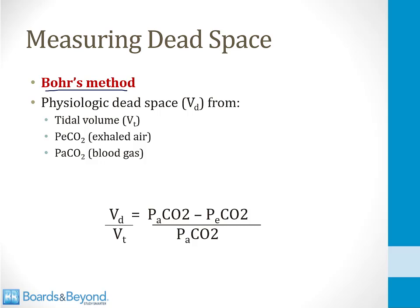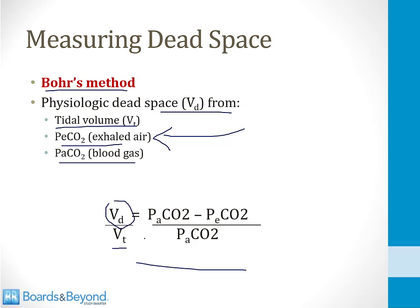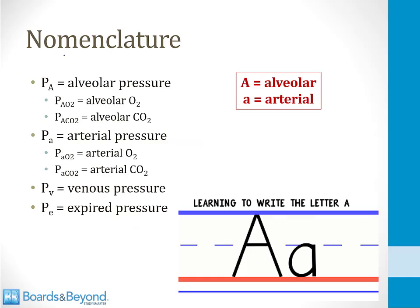Bohr's method lets us determine the physiologic dead space volume, Vd, if we know three parameters: the tidal volume Vt, the concentration of carbon dioxide in exhaled air, and the concentration of CO2 in the arterial system from a blood gas. Using these three parameters, we can apply the Bohr equation: the ratio of dead space volume to tidal volume equals the arterial CO2 concentration minus the exhaled CO2 concentration, divided by the arterial CO2 concentration.